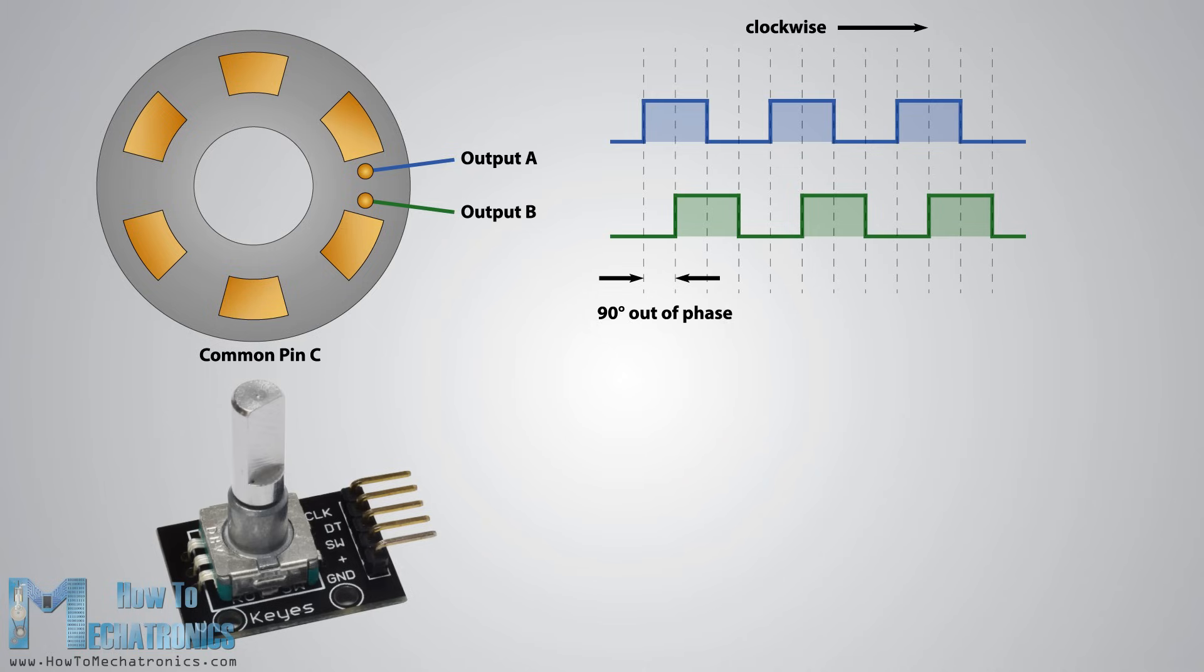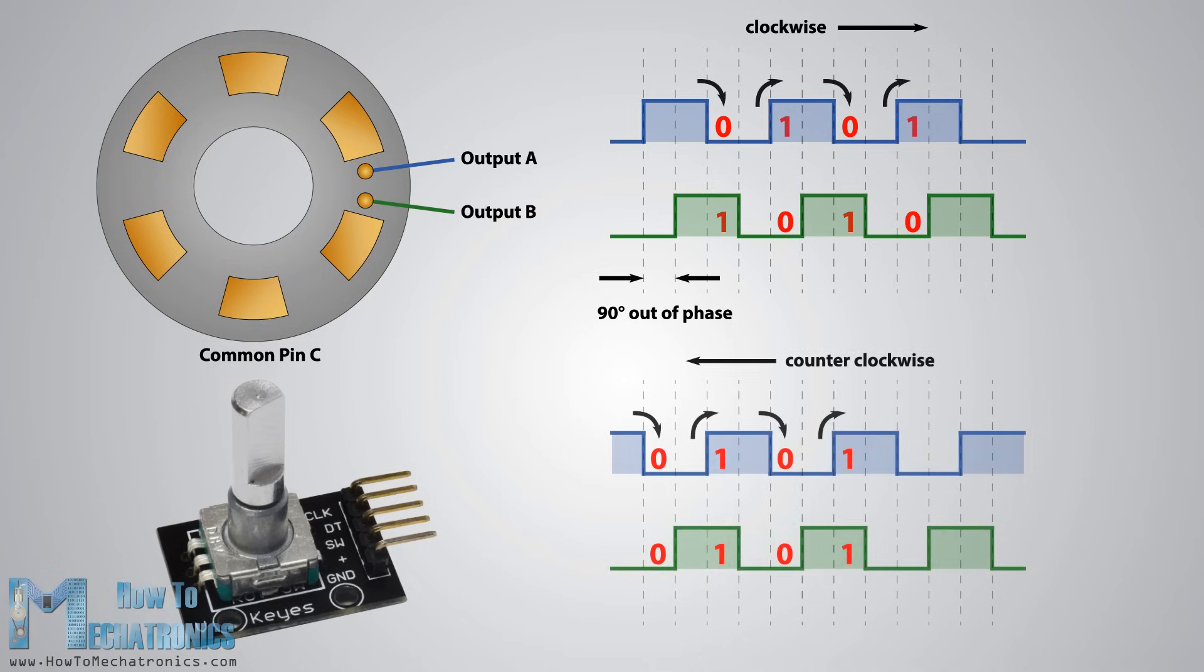So, if we count the steps each time the signal changes from high to low or from low to high, we can notice that at that time the two output signals have opposite values. Vice-versa, if the encoder is rotating counterclockwise, the output signals have equal values. So, considering this, we can easily program our controller to read the encoder position and rotation direction.